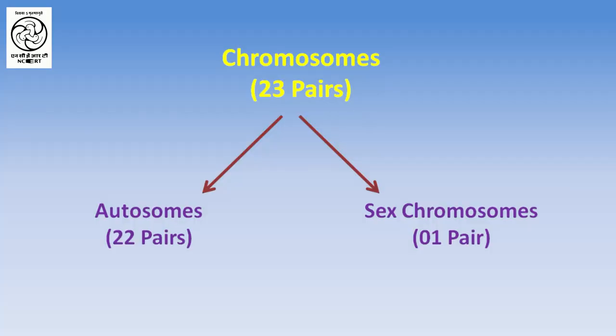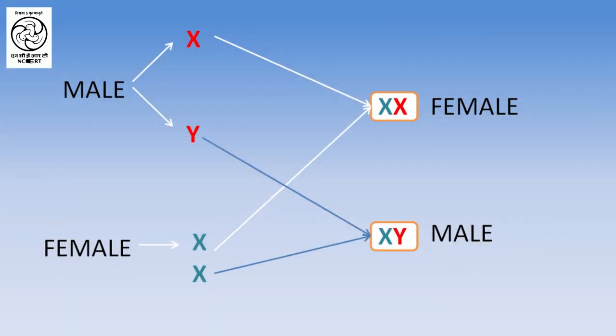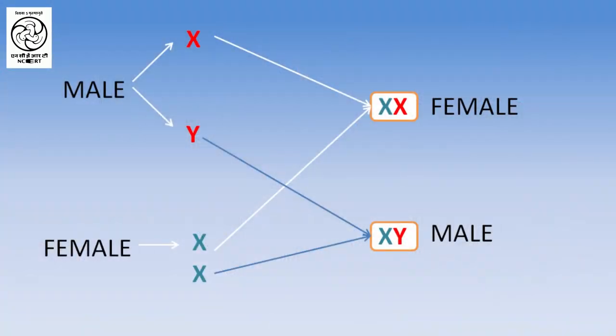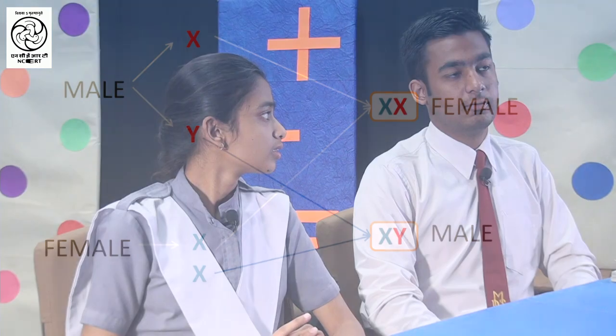But remember, in humans this is the only method which determines the sex of the unborn child, which we have discussed today. I hope that you have got answers to all your questions. Yes ma'am. Can you briefly summarize what you have learned today? Today we learned that there are two types of chromosomes in the human body — autosomes and sex chromosomes. There are two types of sex chromosomes: X and Y in males, whereas only X chromosomes in females. During reproduction, if a sperm containing the Y chromosome fertilizes the egg, then a male child is born.